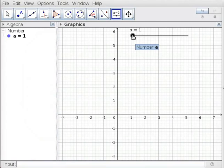Using the slider, a can have values from 1 to 5 in increments of 1. Following the same steps, create sliders b and c.